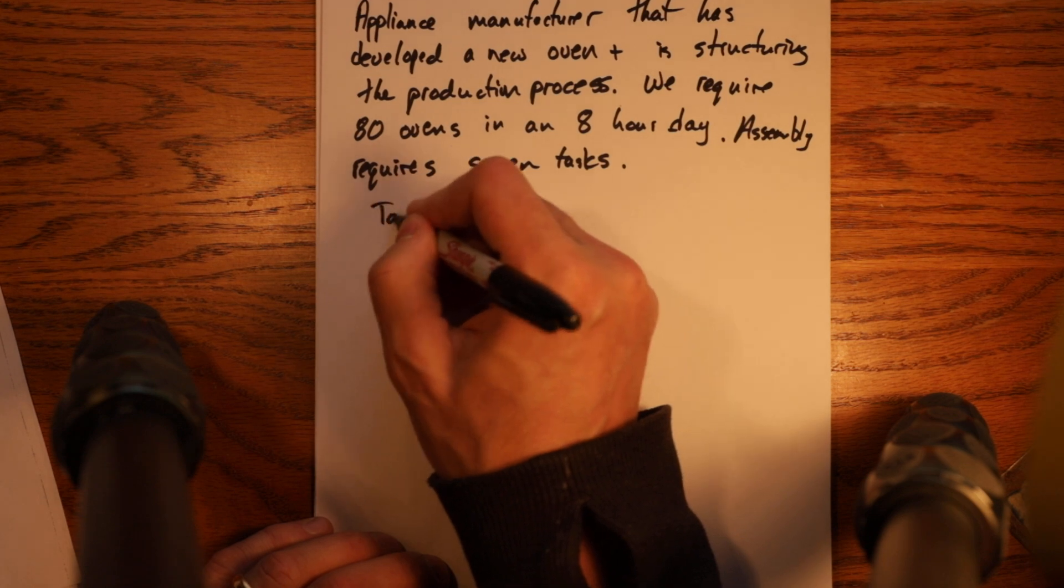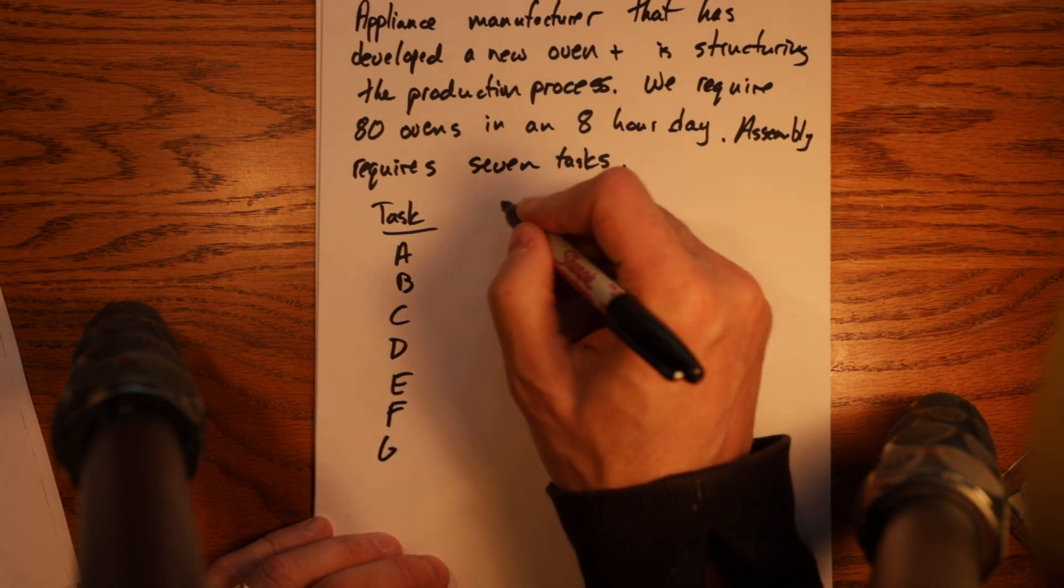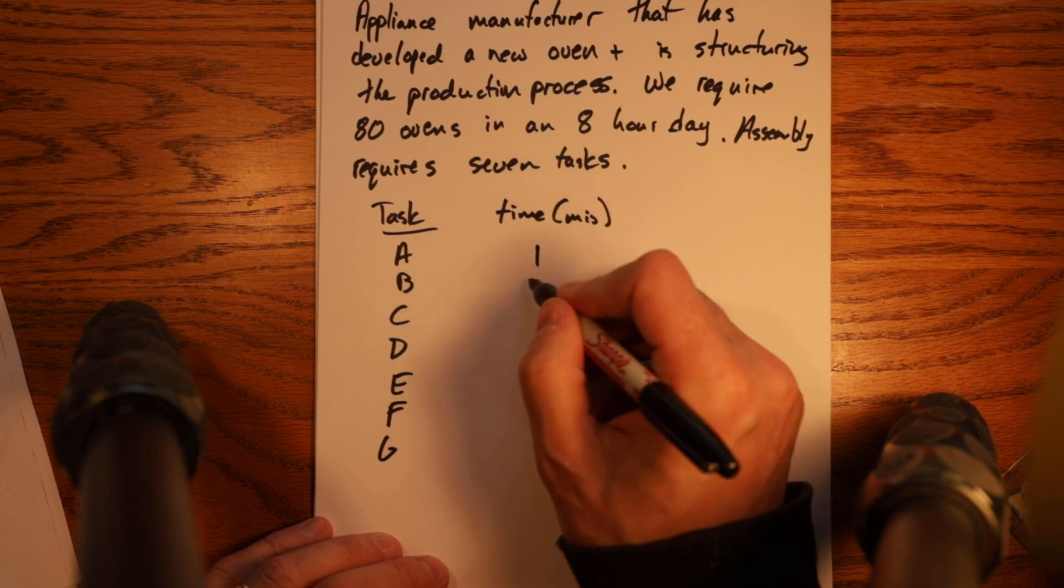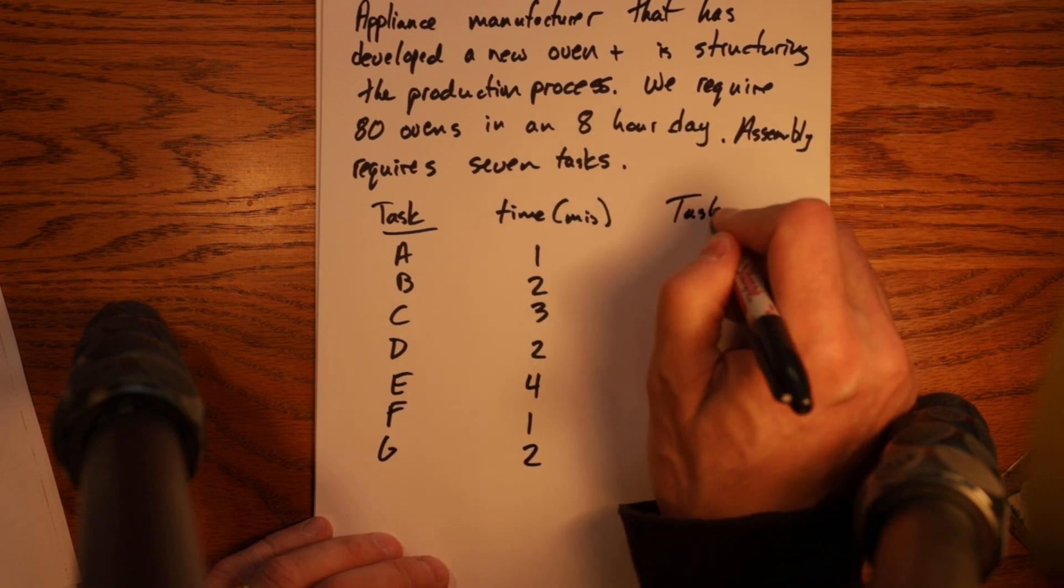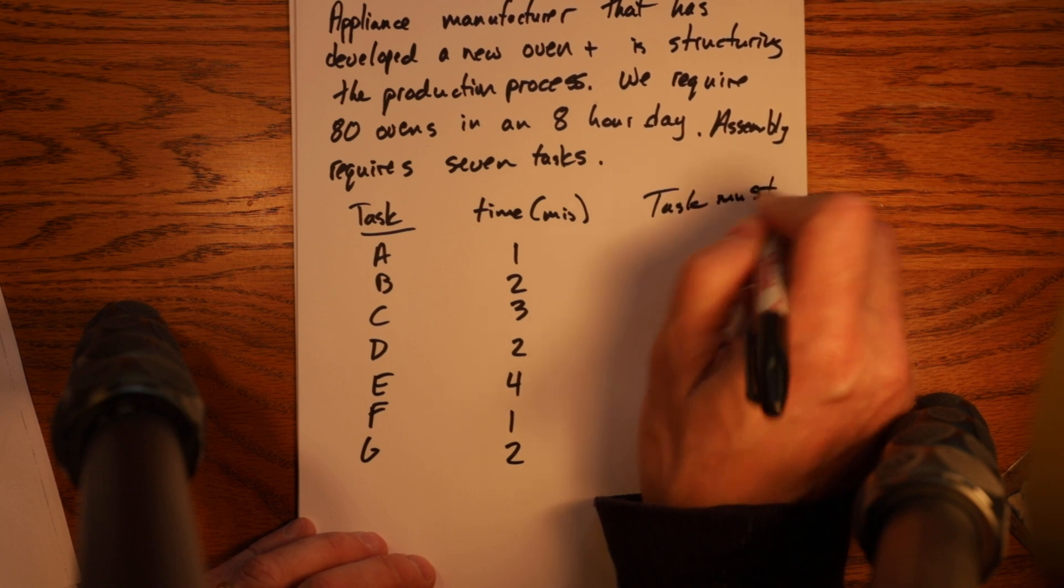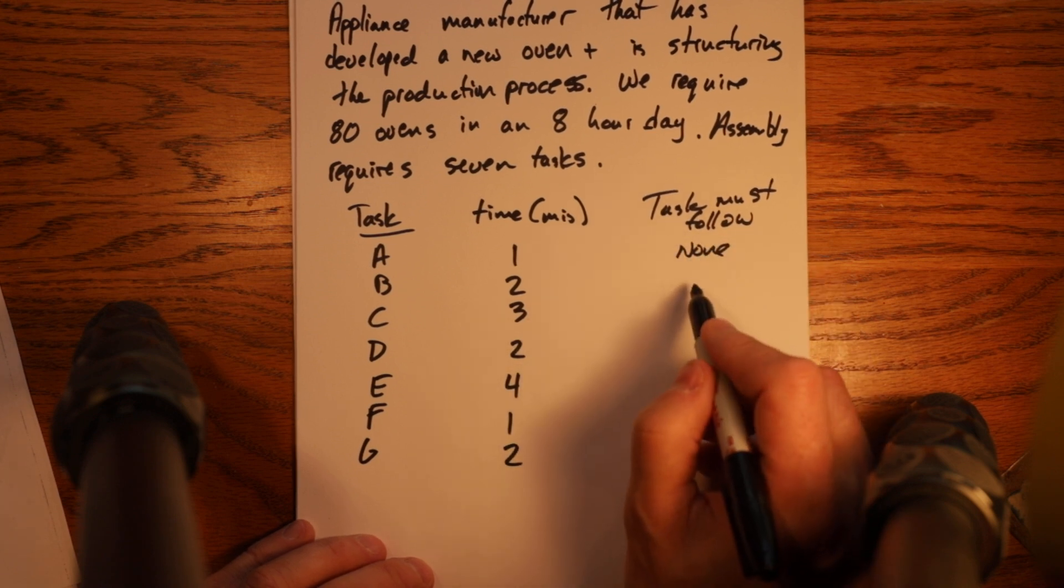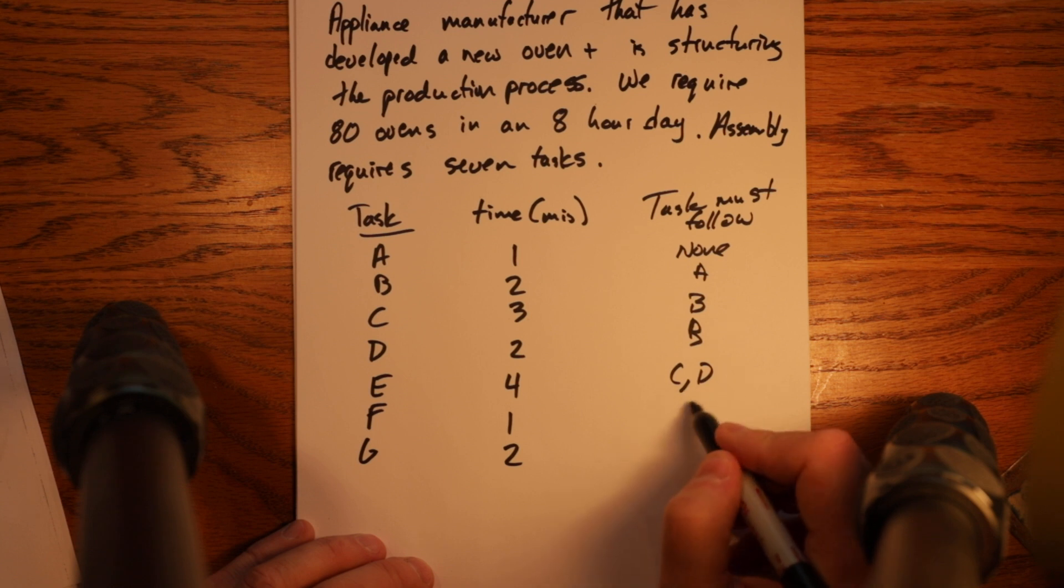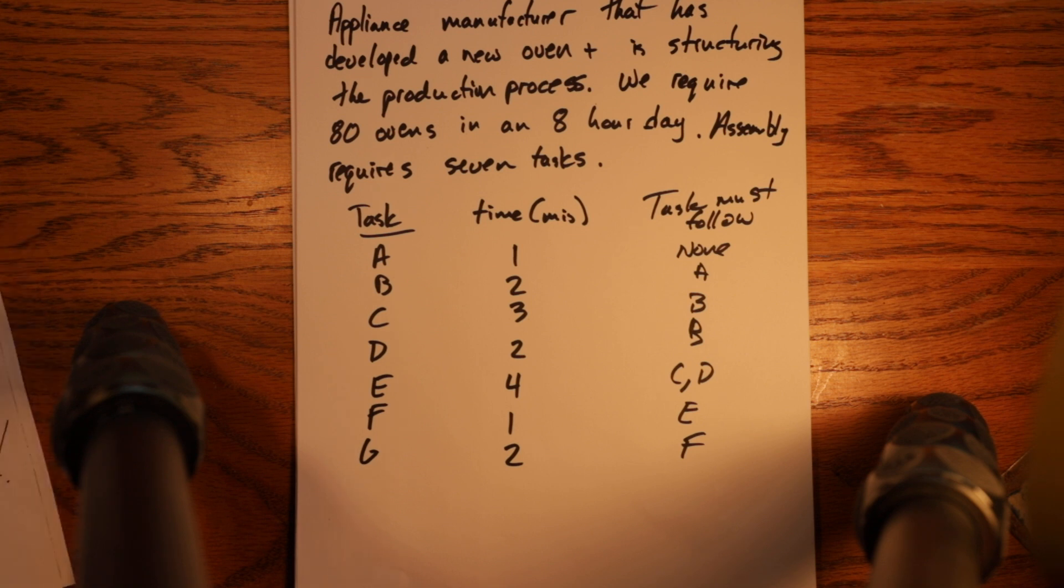So if you look, then I'm just going to give you the information: tasks A, B, C, D, E, F, G. Time in minutes for each task is 1, 2, 3, 2, 4, 1, 2. And a task must follow, which is precedents: A, B, B, C and D, E and F. And those precedent relationships are the exact same as we had in project management. So that gives us the basics.